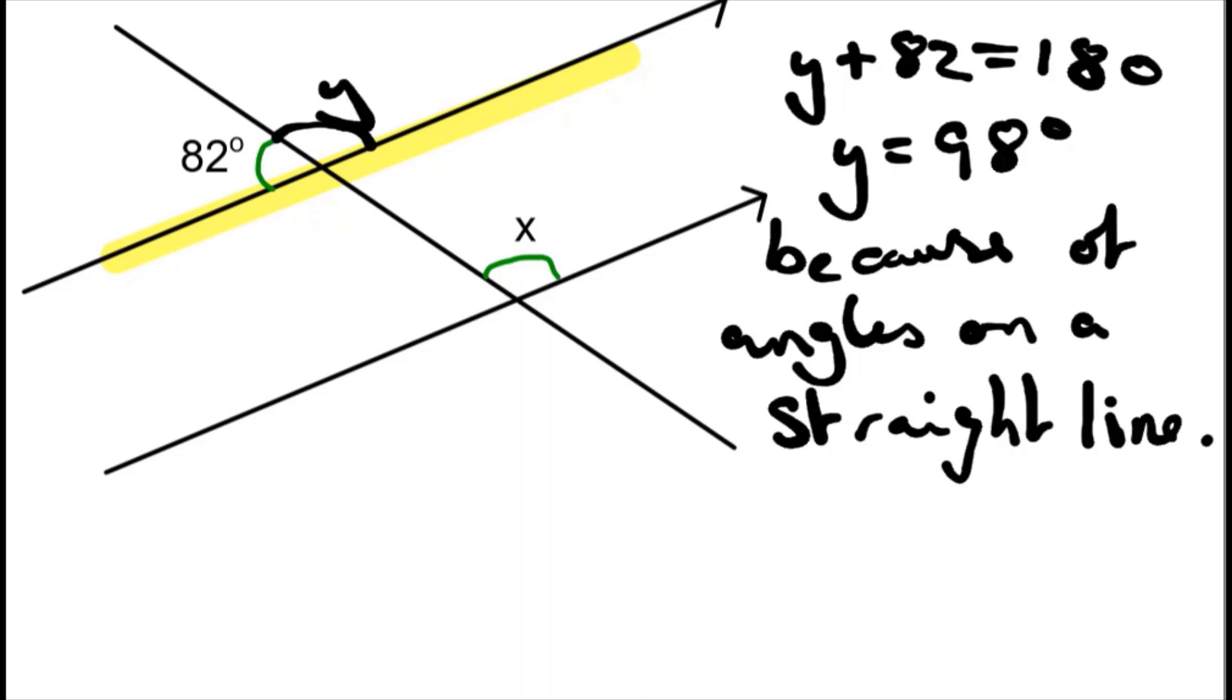However, Y is not the angle we want. We want X down here. But what we can notice is our Y angle is this bit here, our X is this bit here. So we created like an F shape.